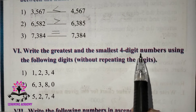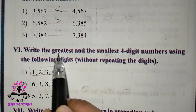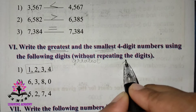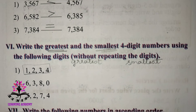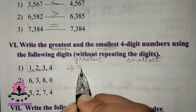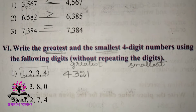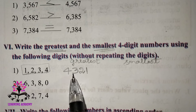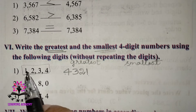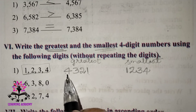Form the greatest and smallest four-digit number using the digits 1, 2, 3, 4 without repeating. To write the greatest, arrange in descending order: 4, 3, 2, 1 — giving 4321. To write the smallest, arrange in ascending order: 1, 2, 3, 4 — giving 1234.